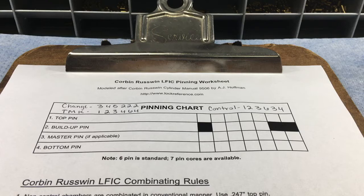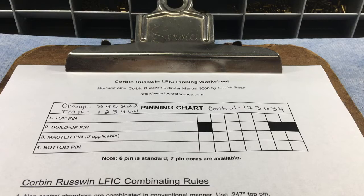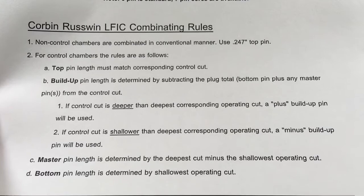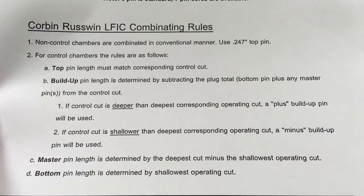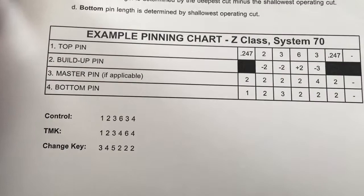This chart in front of me is one we made over at lockReference.com — free to download, free to use. You go to lockReference.com, click on Tools, then select Pinning Worksheets, and the second tab is Corbin and Russell One. In addition to the pinning chart grid, we've also included the combinating rules — how to determine your top build-up, master if present, and the bottom pins depending on your key cuts. We even included an example pinning chart — in this case a Z class System 70 depth system with a control top master key (TMK) and change key.